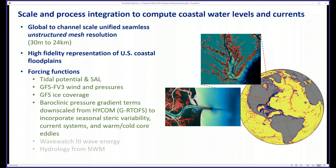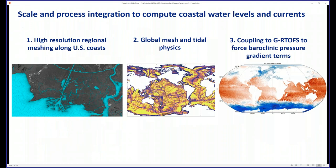We also drive baroclinic pressure gradient terms so that we can get coastal currents. We get that information by hooking into the HICOM GR-TOFS-based model. We can model seasonal variability and steric water levels, warm and cold core eddies, et cetera. We're also working on coupling into WaveWatch 3 as well as the hydrology from the National Water Model.